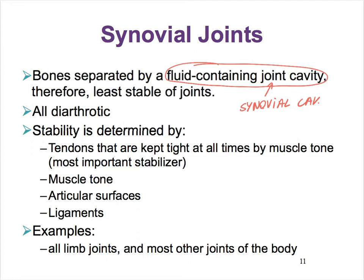And because there is this cavity present filled with that fluid, these joints are very movable. So if we classify them functionally, we would say that they are diarthritic. Now, being extremely mobile, unfortunately, has a consequence, and that is that these are the least stable joints.